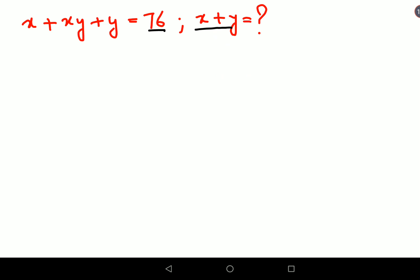Now we start with the first step. We have x plus xy plus y. From here, x is common, so let's take x common and we get x times (1 plus y). Then we have plus y over here, and this equals 76.